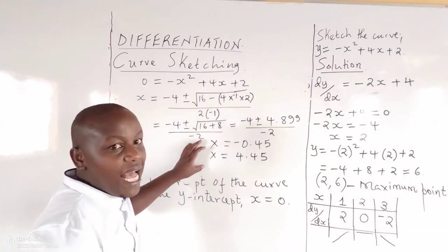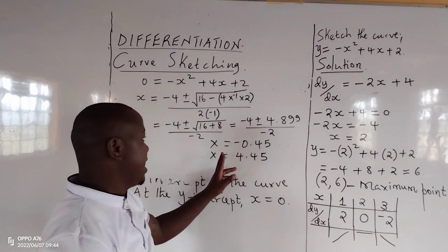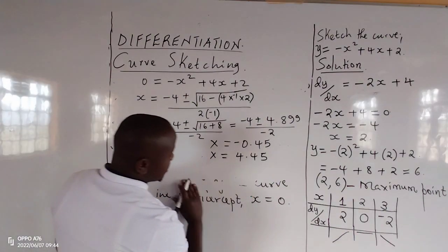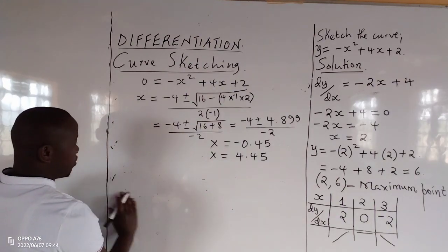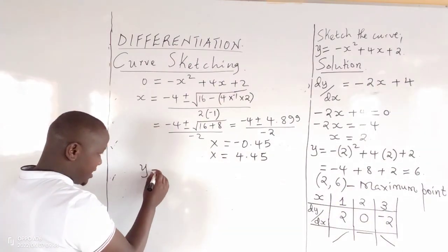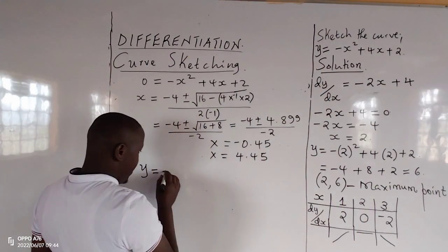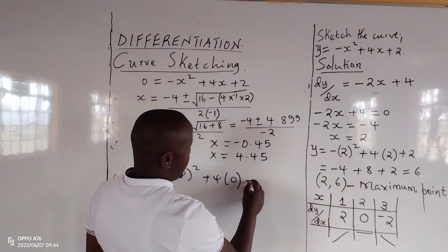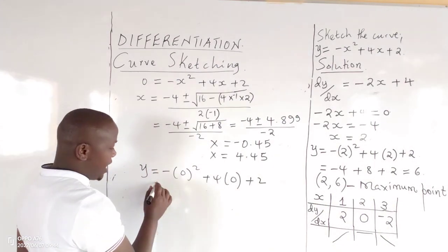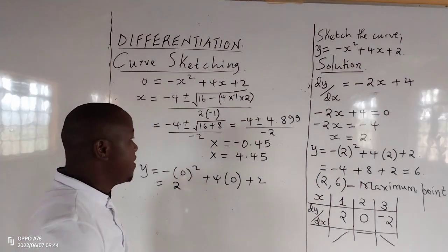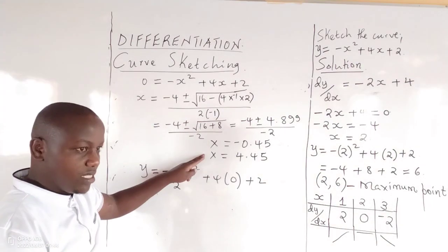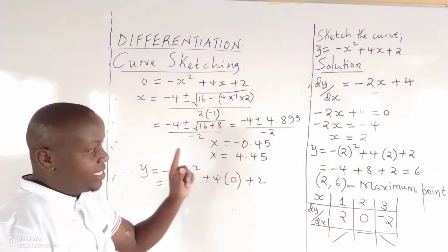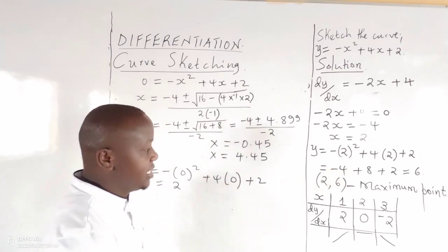The curve cuts the x-axis at two points. We also check where the curve cuts the y-axis. At the y-intercept, x equals zero, so y equals negative 0 squared plus 4 times 0 plus 2, which gives y equals 2. Therefore, we have x-intercepts at approximately negative 0.45 and 4.45, the y-intercept at 2, and the turning point at (2, 6), which is a maximum point.